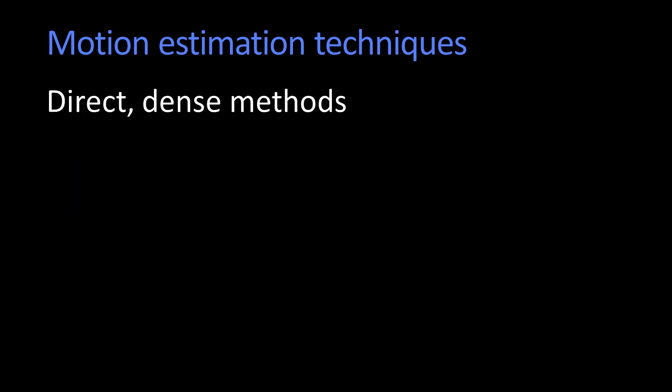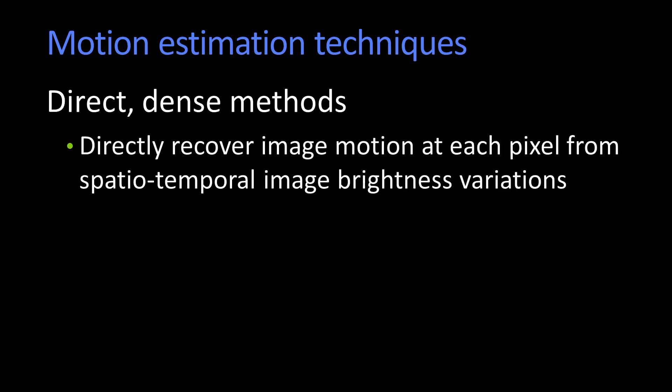The other class of methods are what are called direct or dense methods. In dense methods, you're directly recovering the motion of every pixel — the fancy word is spatial temporal image brightness variation.